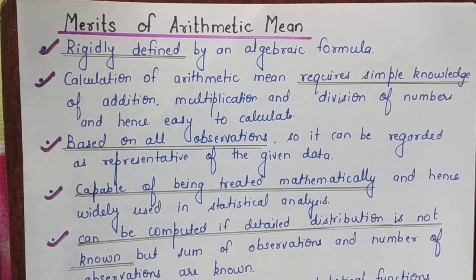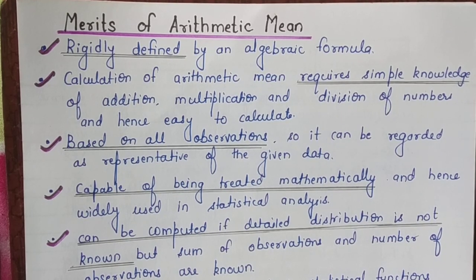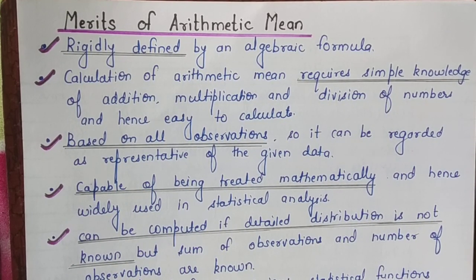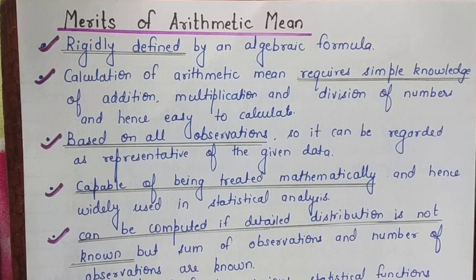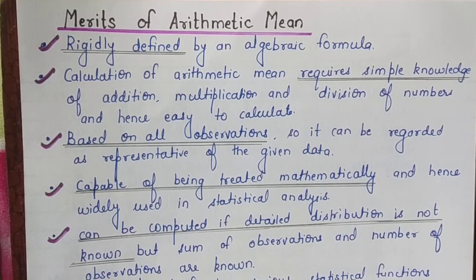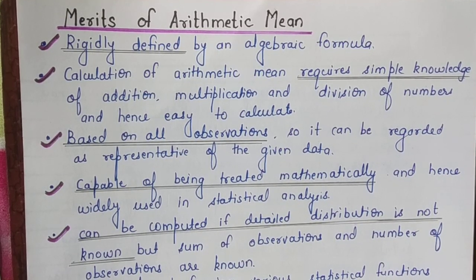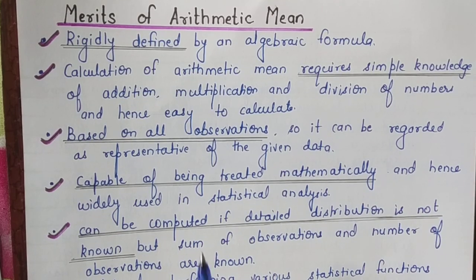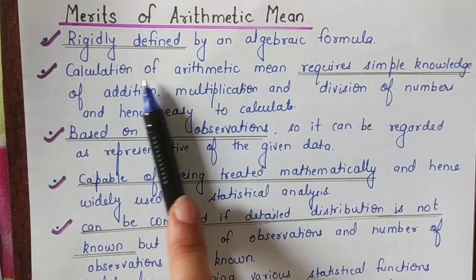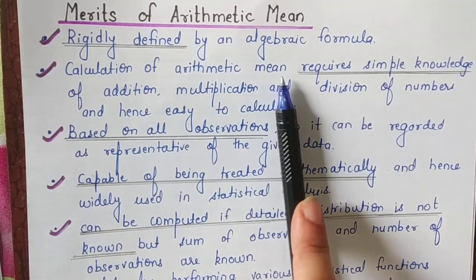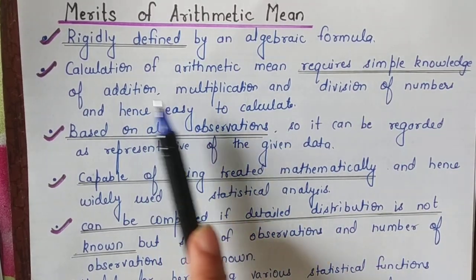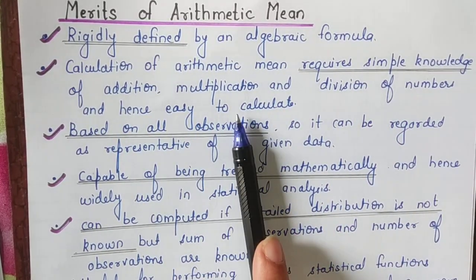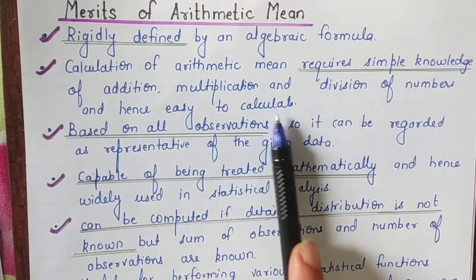Number two: arithmetic mean is not difficult to calculate. You need only simple knowledge of addition, subtraction, multiplication, and division of numbers, and hence it is very easy to calculate.